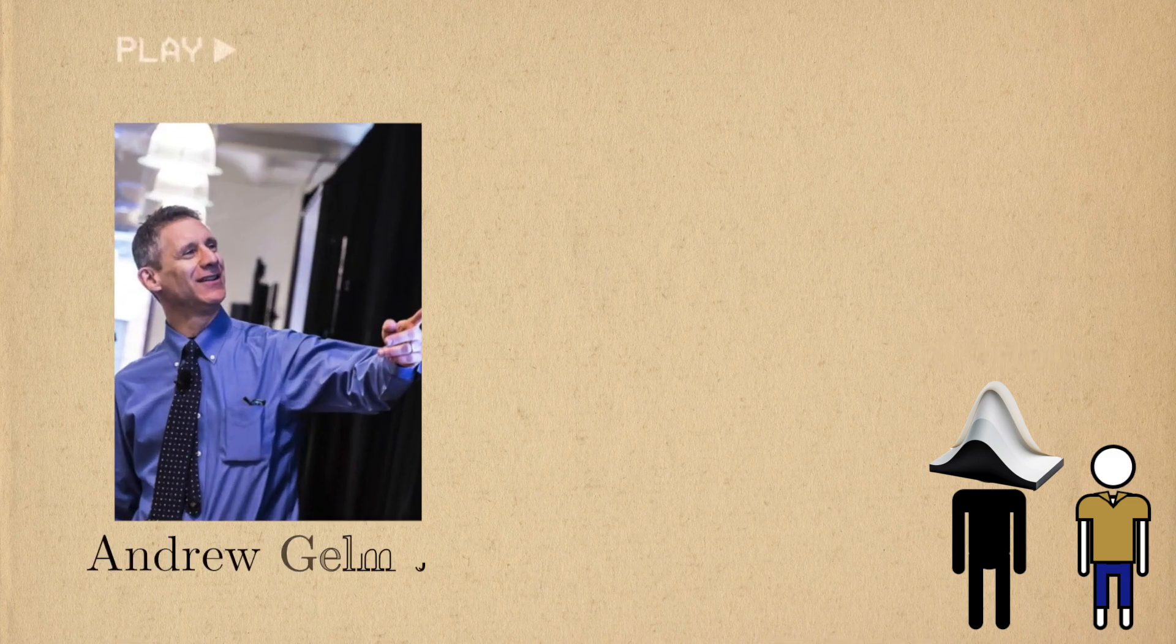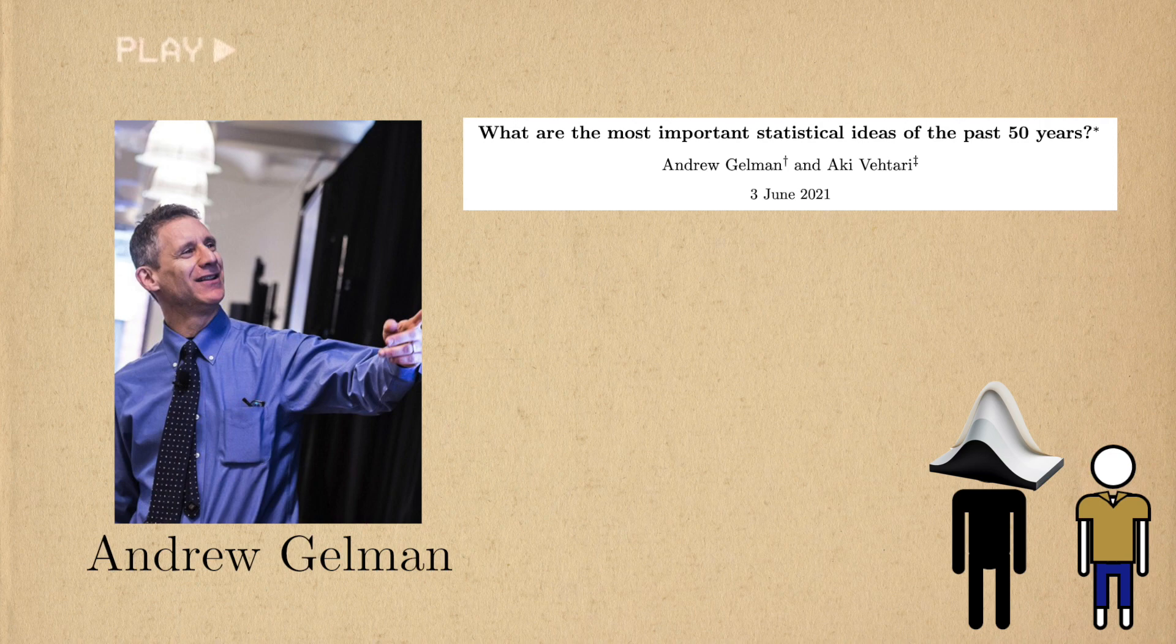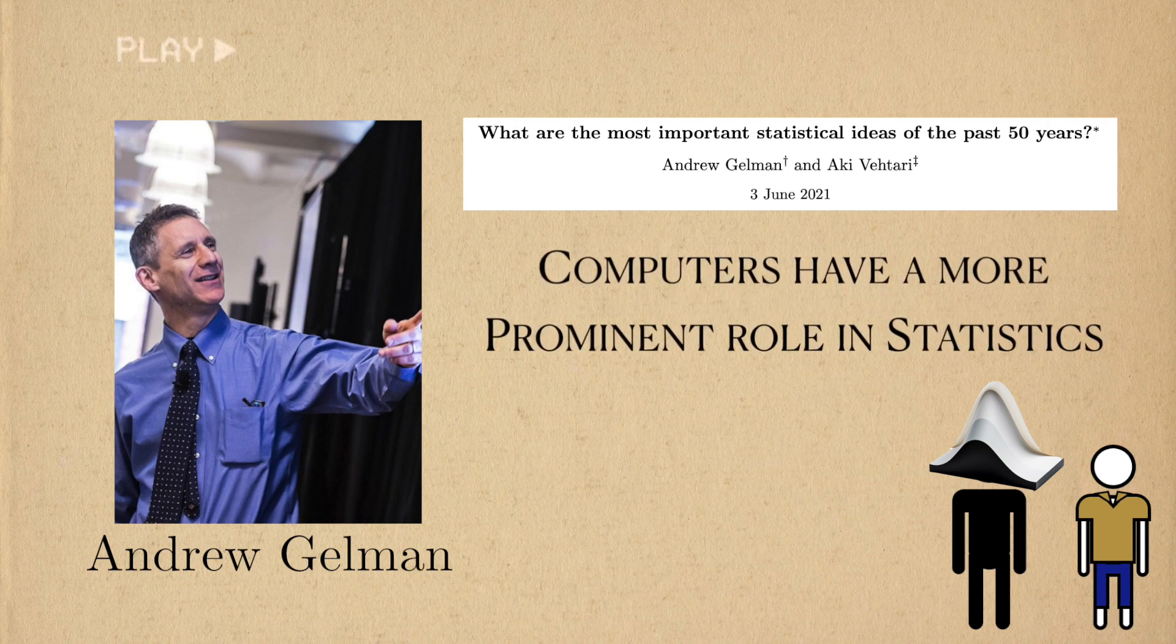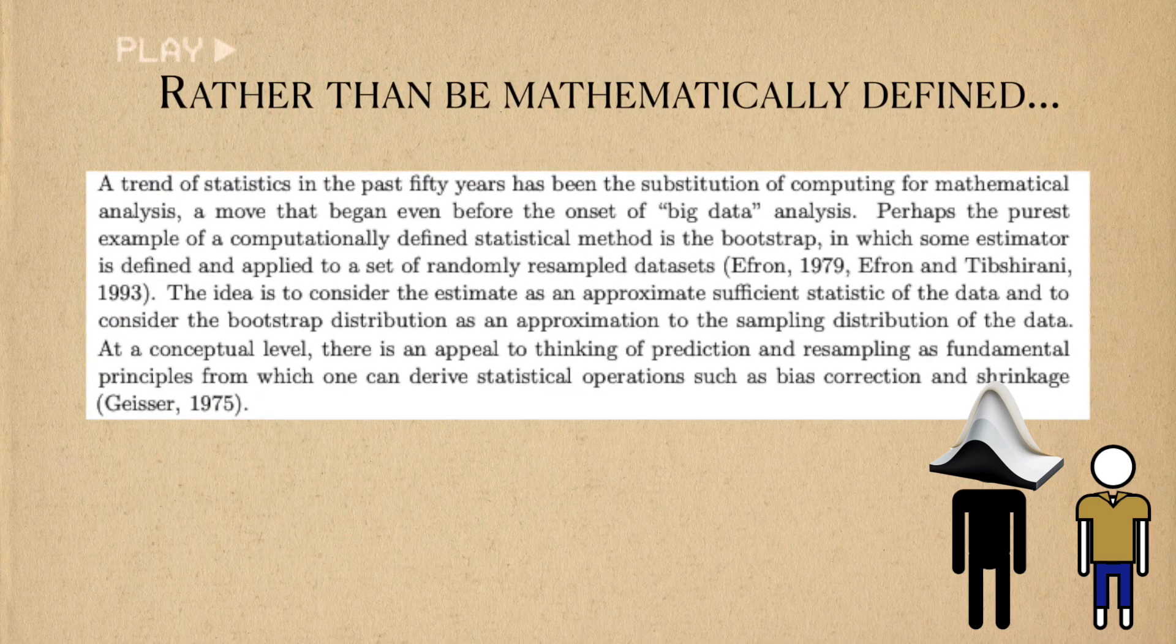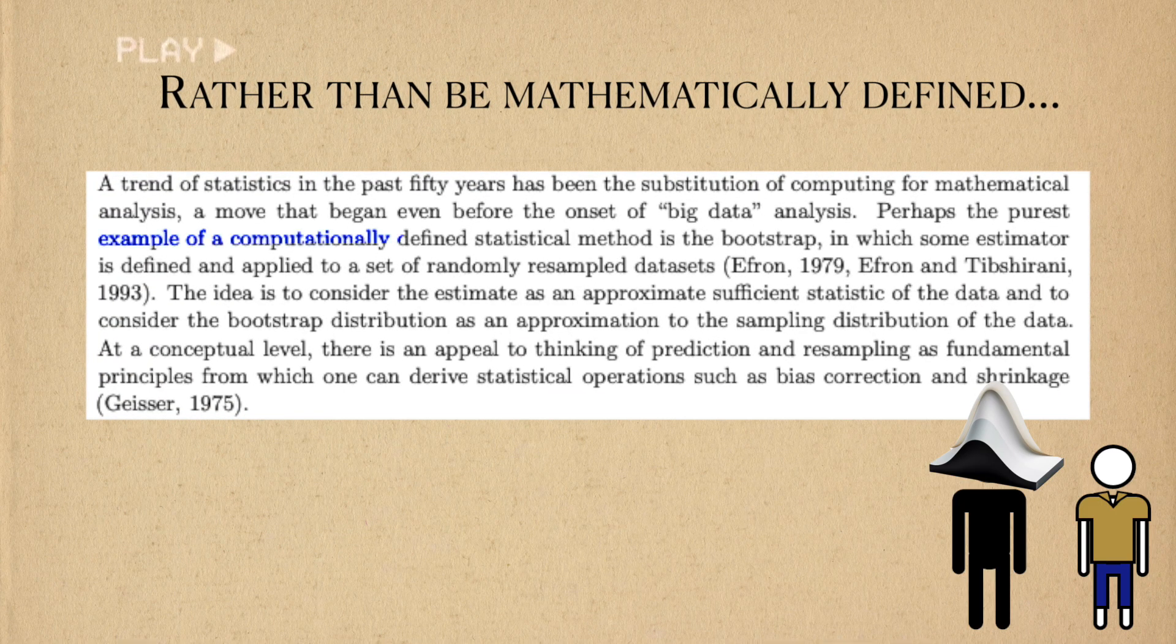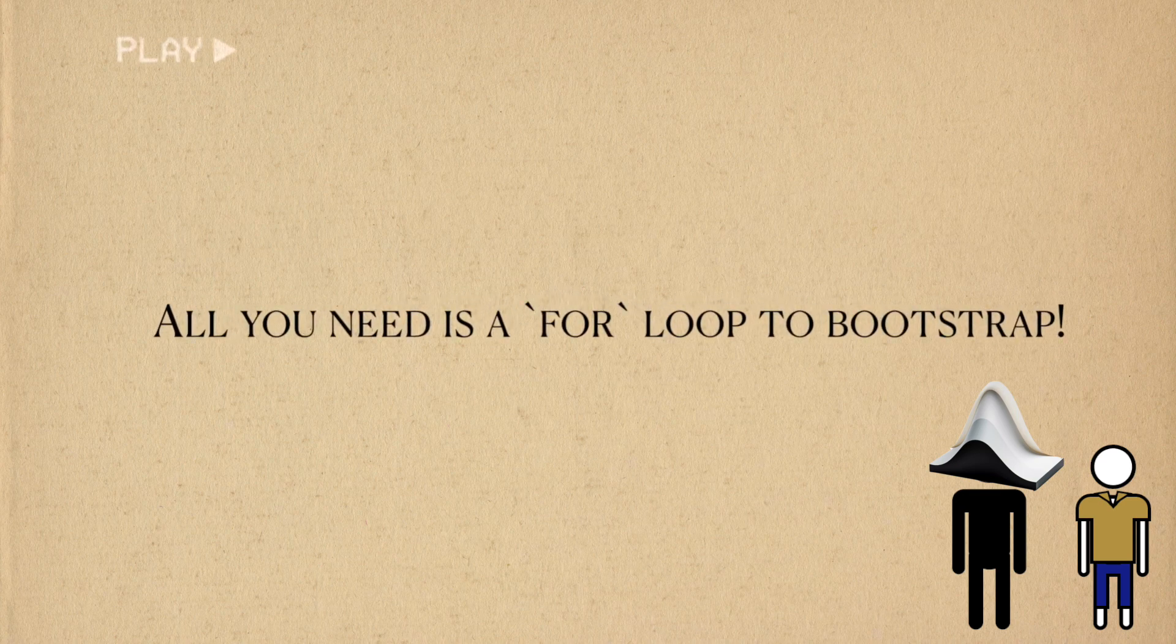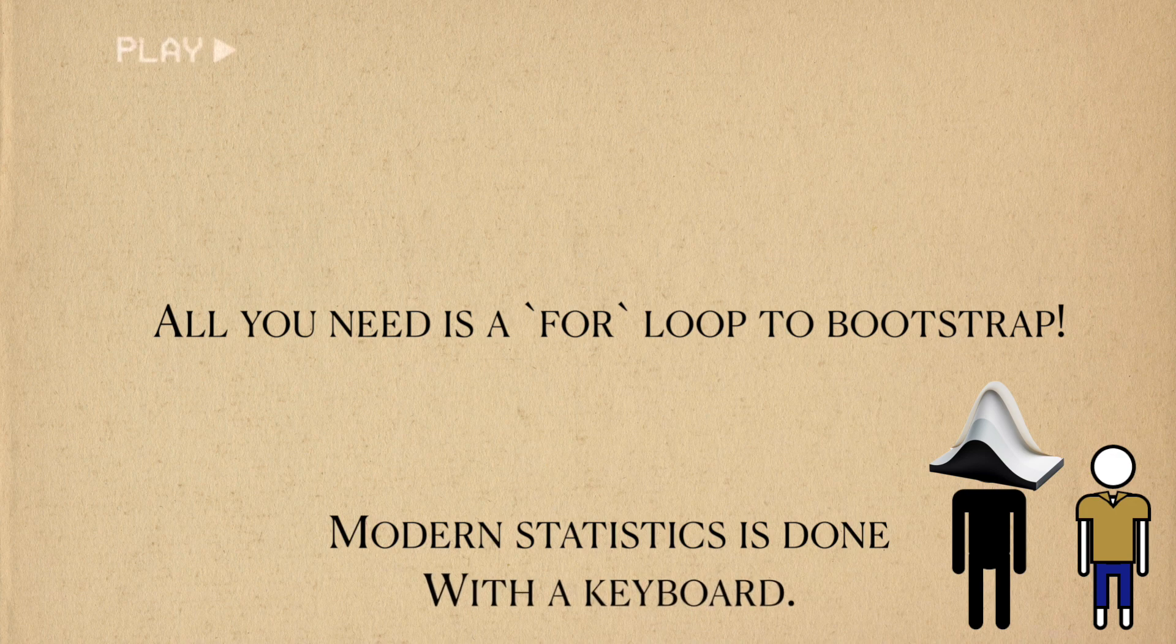But as Andrew Gelman notes in his paper on the most important statistical ideas in the last 50 years, computers have come to have a more prominent role in statistics. Rather than being mathematically derived, the bootstrap is computationally defined. The only technology you need to perform the bootstrap is a for-loop. Modern statistics is done with the keyboard now.